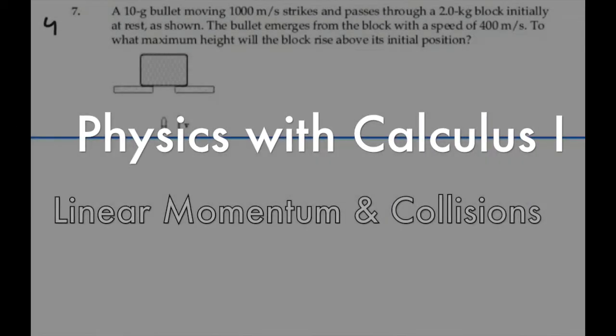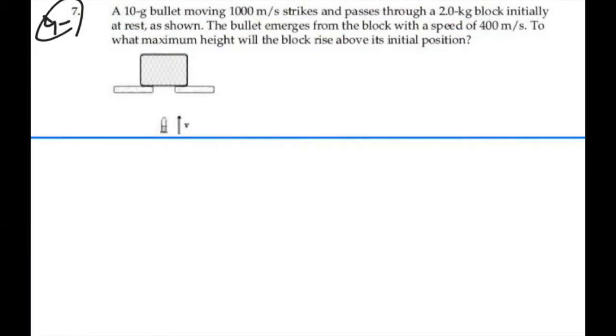Here's problem 9.7. A 10 gram bullet moving 1,000 meters per second strikes and passes through a 2 kilogram block initially at rest as shown. The bullet emerges from the block with a speed of 400 meters per second. To what maximum height will the block rise above its initial position?